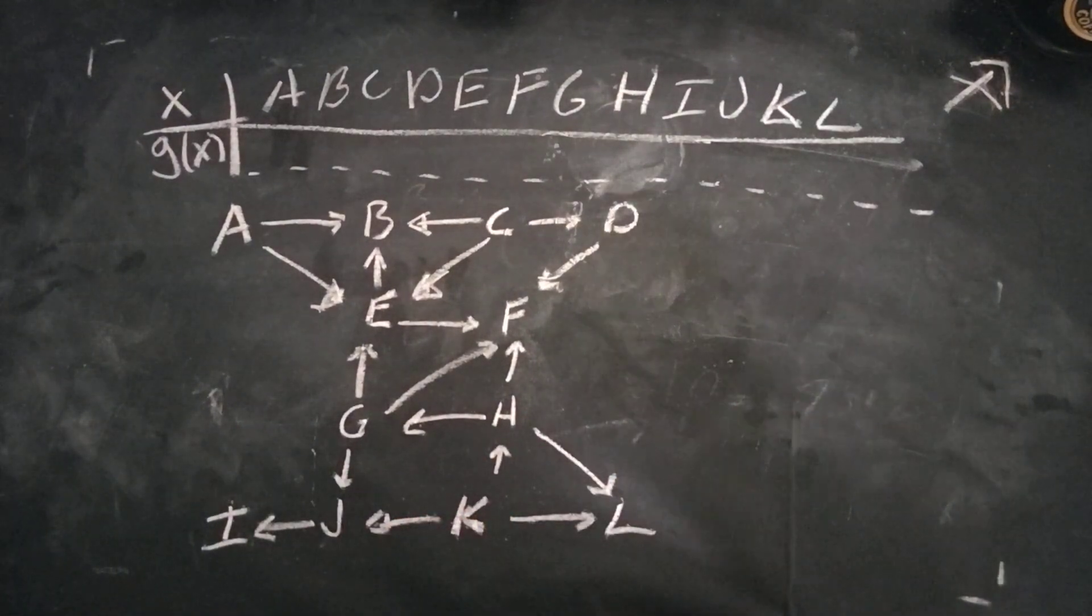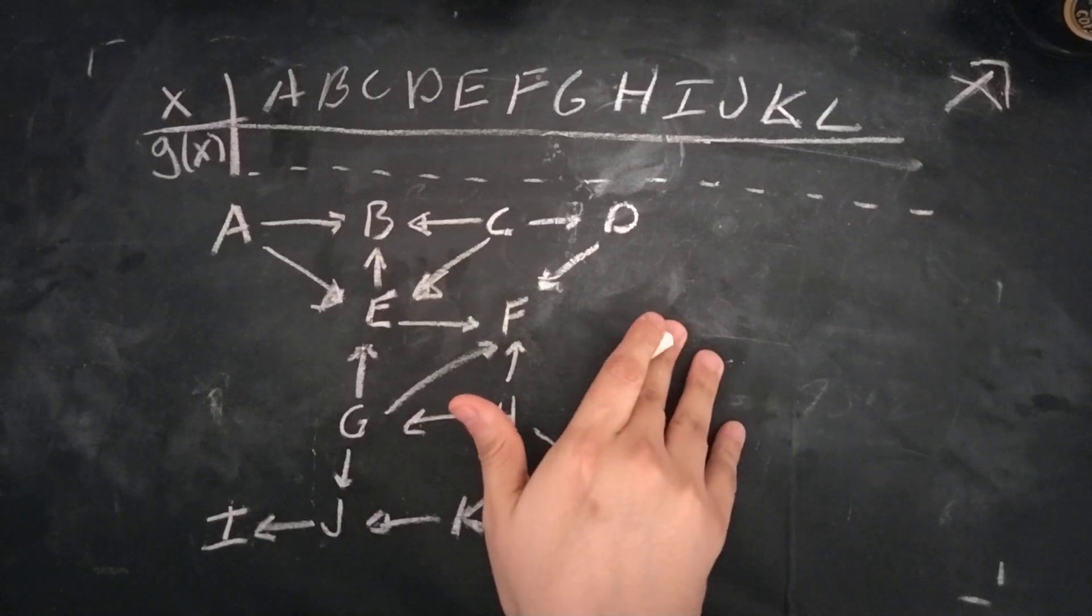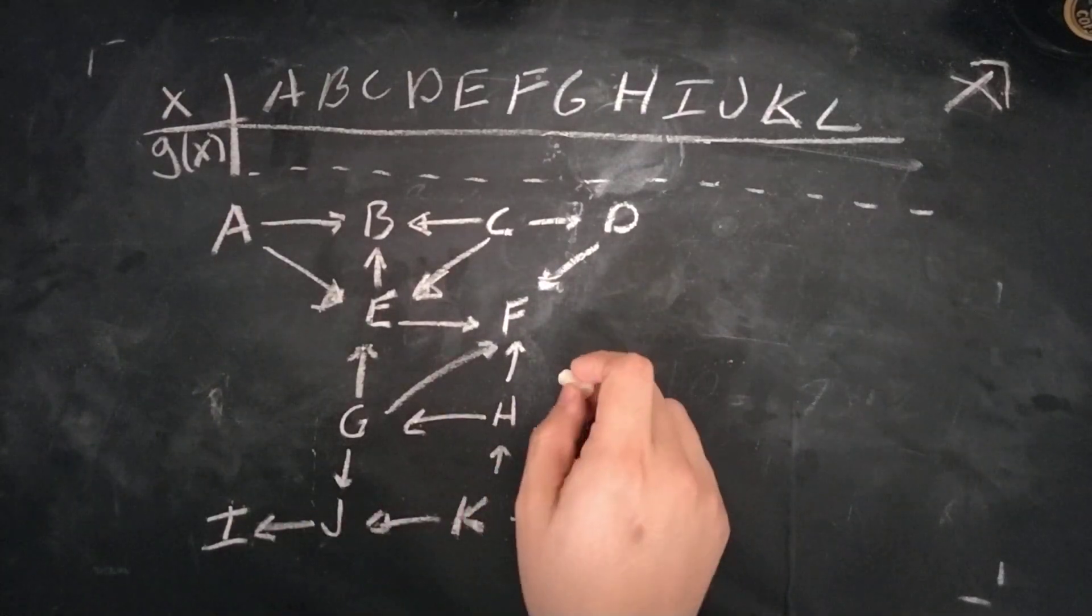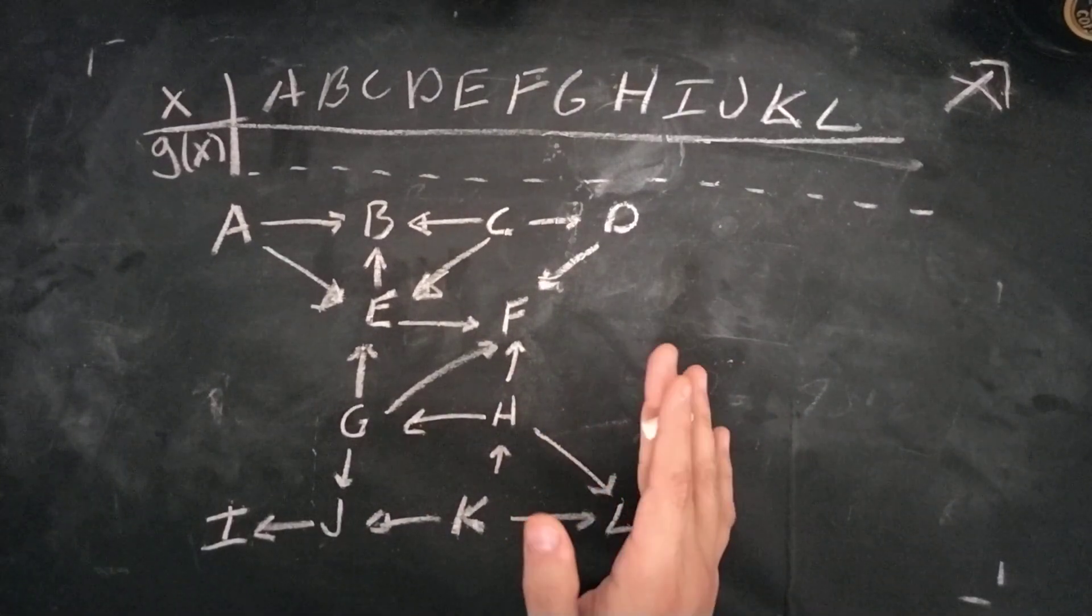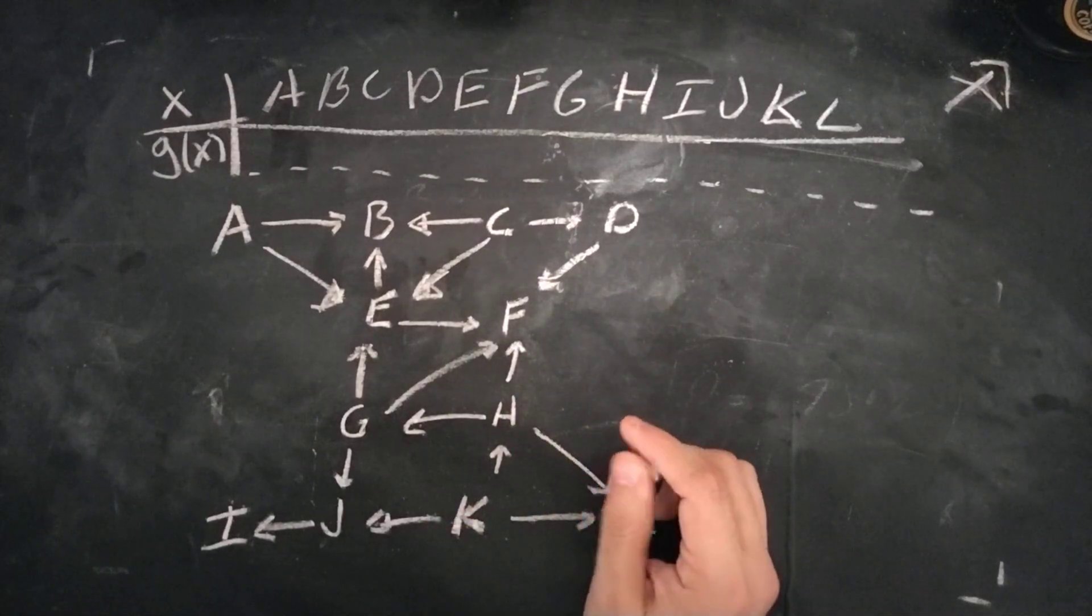It's asking you to find the Sprague-Grundy function at each of the vertices. Now if you don't even know what the function is, I'll give a brief explanation about it.